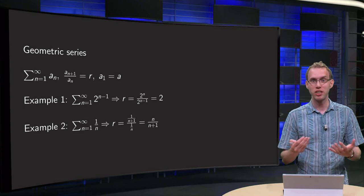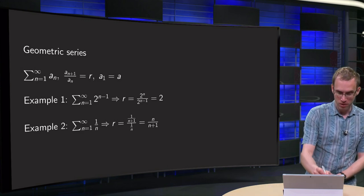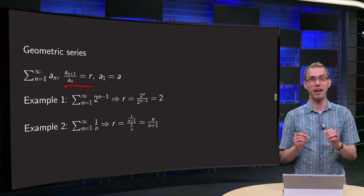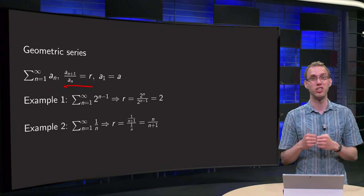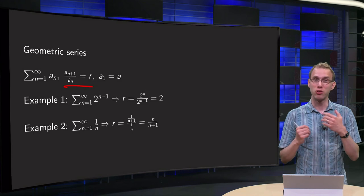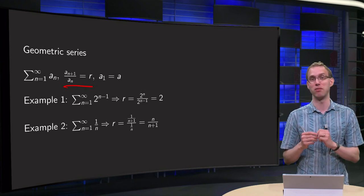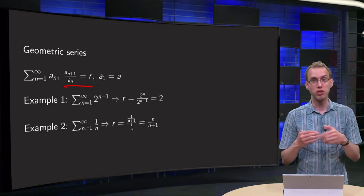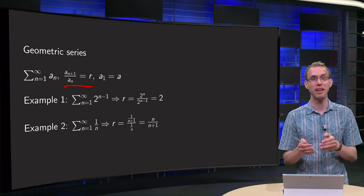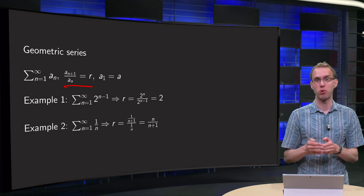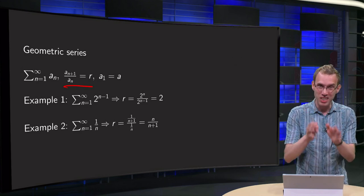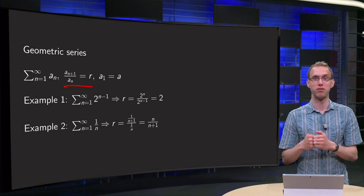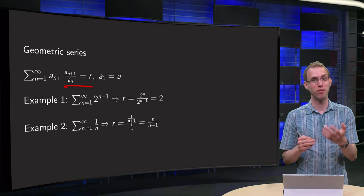When is a series geometric? If you have a_n and you divide it by a_{n+1}, so the quotient of two consecutive terms, if this quotient equals r and is independent of n, that is important. If your quotient of consecutive terms is independent of n, then you have a so-called geometric series. Of course the terms themselves may depend on n, but the quotient of two consecutive terms may not depend on n. Then we have a geometric series.